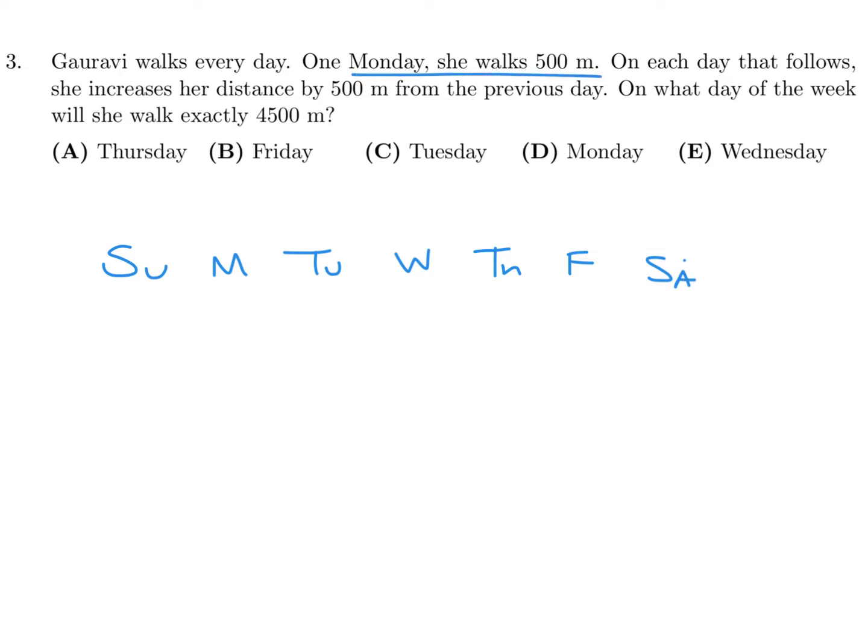Monday, right? So .5 kilometers. And then 1, 1.5, 2, 2.5, 3, 3.5, 4, 4.5. And this is the day that they want, and that looks like a Tuesday to me. So that's C for number 3.